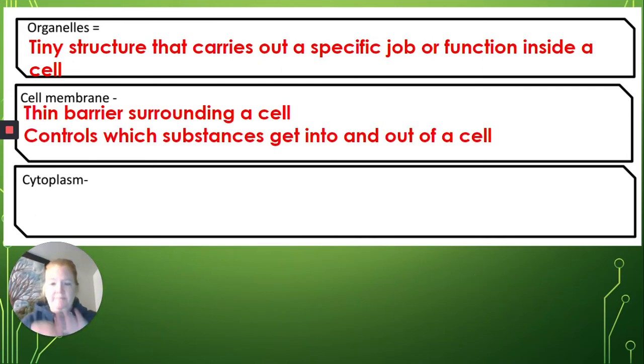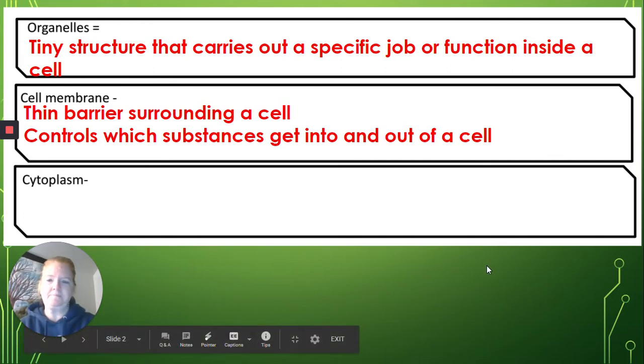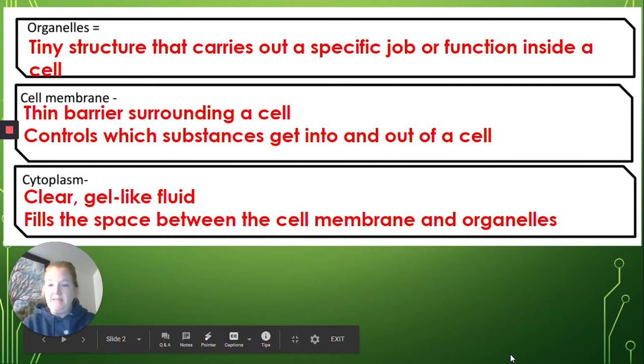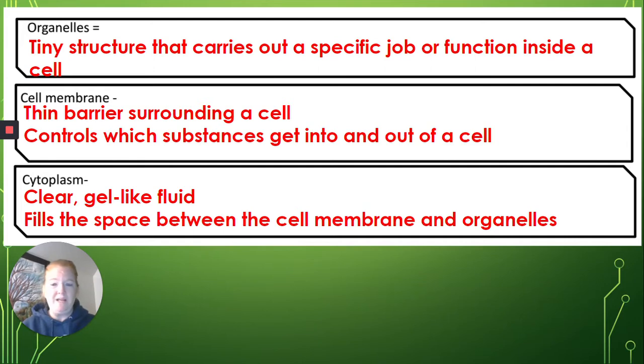The cell membrane is a thin, very thin border barrier surrounding a cell. It controls what gets in, but also what gets out of a cell. We want to keep the organelles and nutrients inside the cell, but we want to get rid of waste or anything that might be harmful. Cytoplasm is a clear gel-like fluid. It fills the space between the cell membrane and the organelles, and it helps to give the cell some shape.